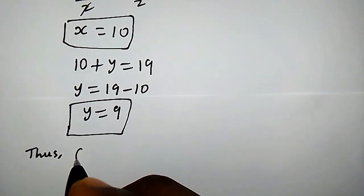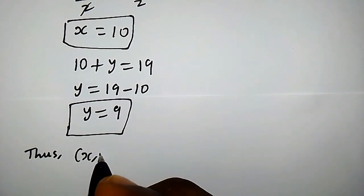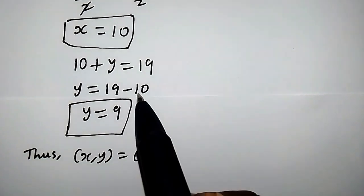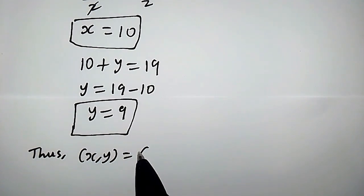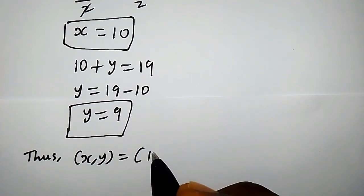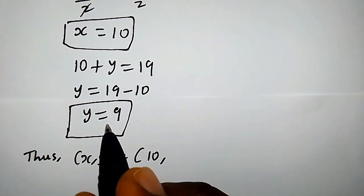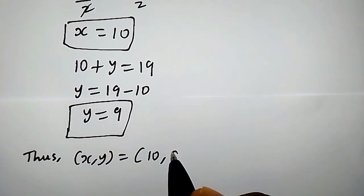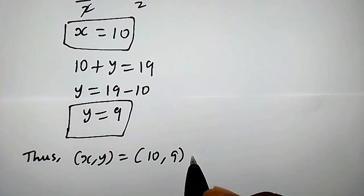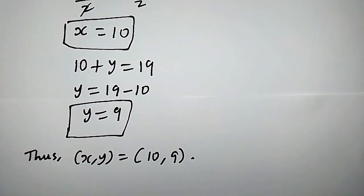Thus, x comma y equals (10, 9). This is the first solution.